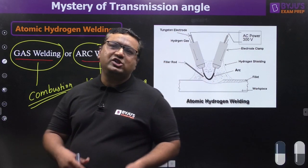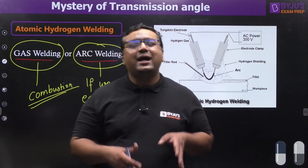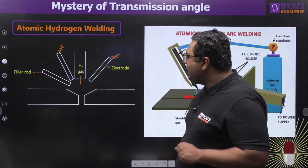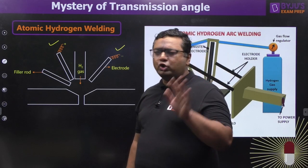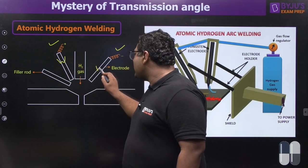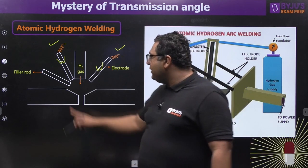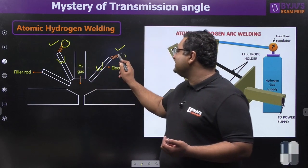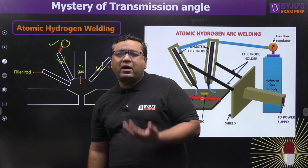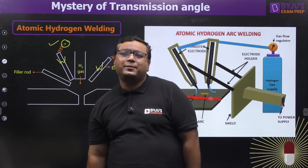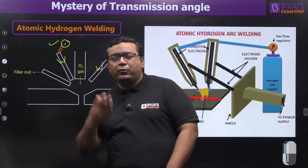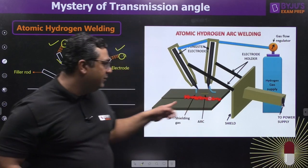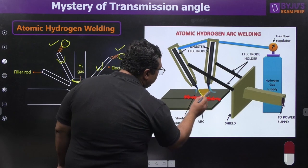So before deciding which type of welding atomic hydrogen welding is, let us understand the process. We have electrode 1 and electrode 2, both made of tungsten. Between these two tungsten electrodes, we provide a power supply — an anode and a cathode. When power is supplied, an arc is generated between the two electrodes, as shown in the animation.